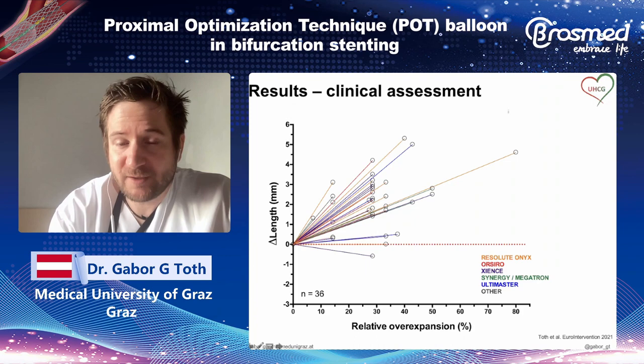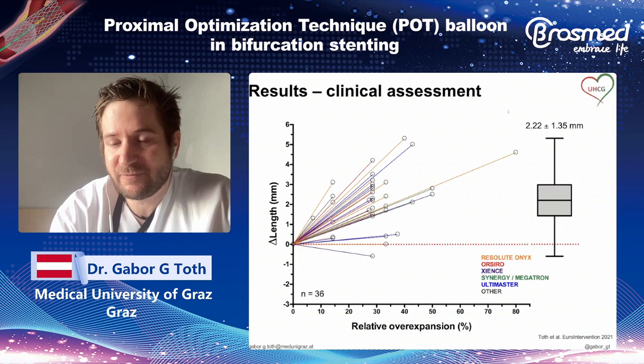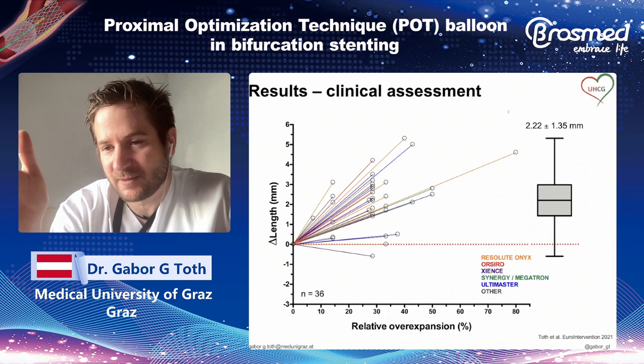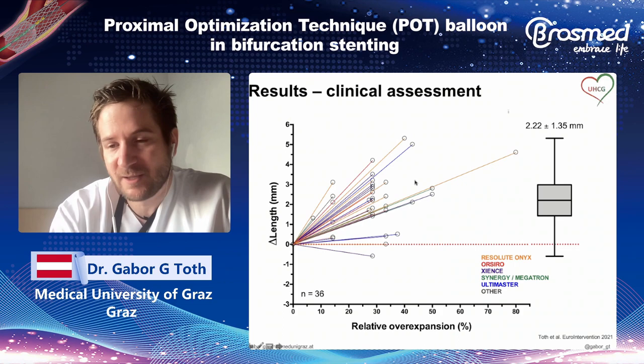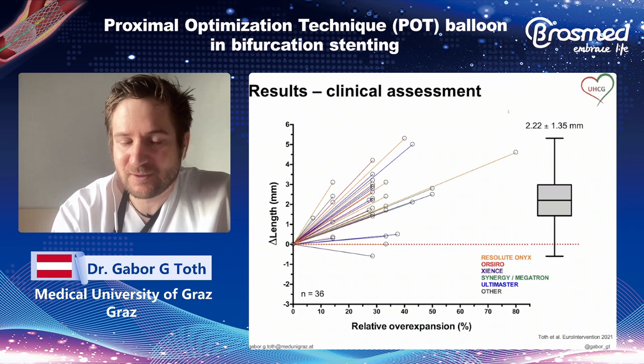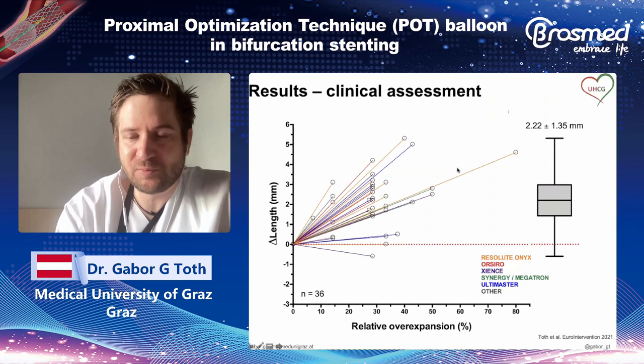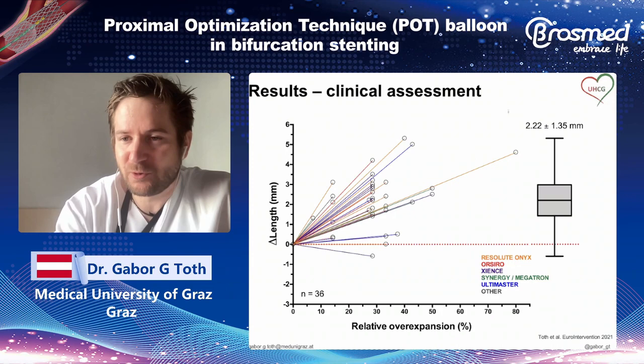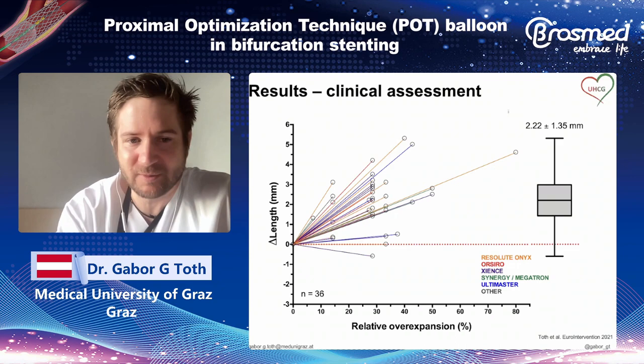Why is it important? Especially for left main, where the mismatch between the distal branch and left main is marked, we aim for a very ostial position — nailing the ostium with our stent when implanting. But understanding that this elongation happens during proximal optimization, it will result in aortic protrusion of the stent. I can't give you a certain recipe to avoid this problem, but since this observation I'm less focused on correct ostial nailing of the stent, knowing that the stent will elongate proximally.